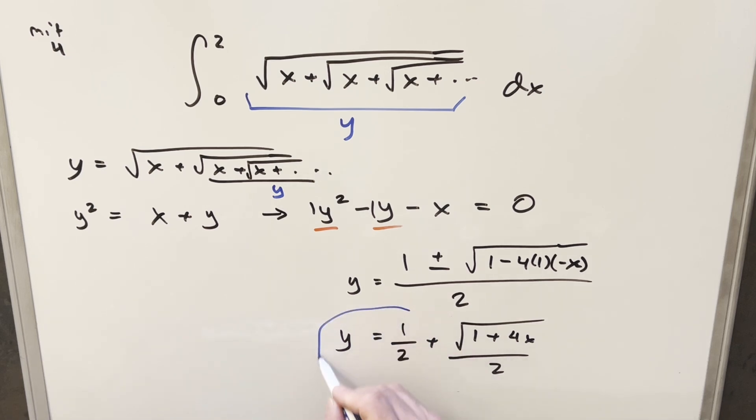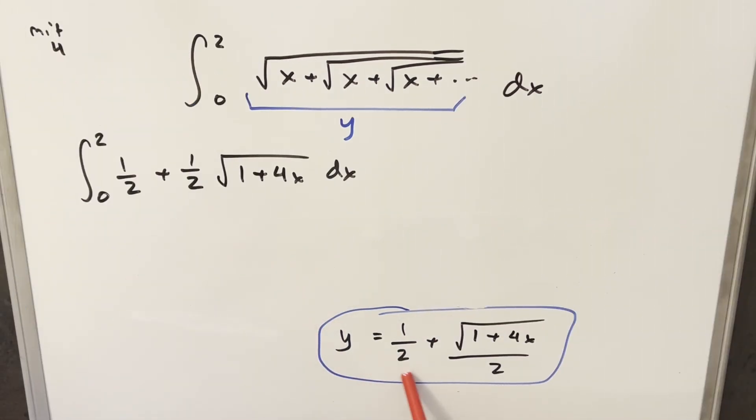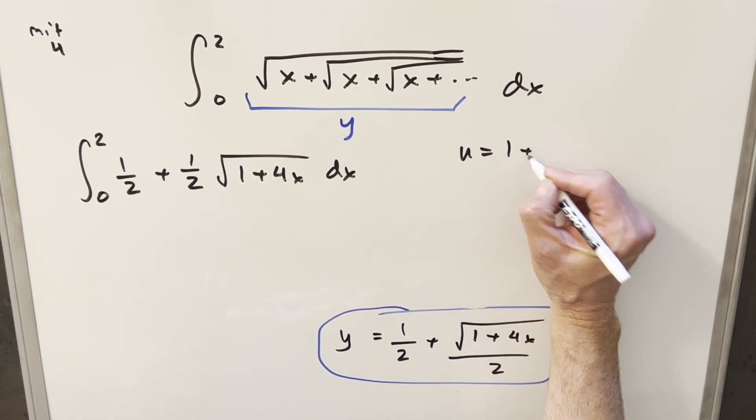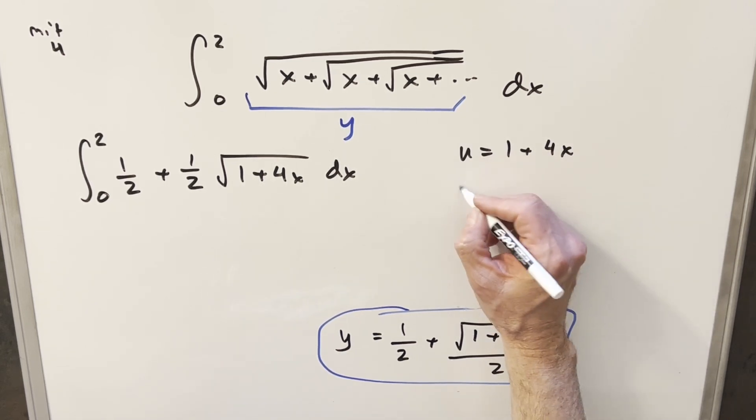Now we've found a y value all in terms of x, and this is something we can integrate. I'll take this and plug it back into the integral to finish this off. I'll use a u substitution, with u equal to 1 plus 4x.